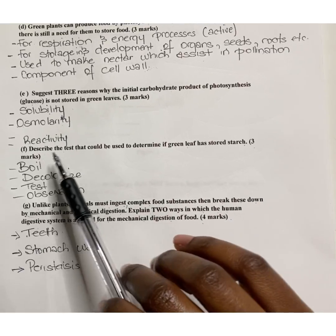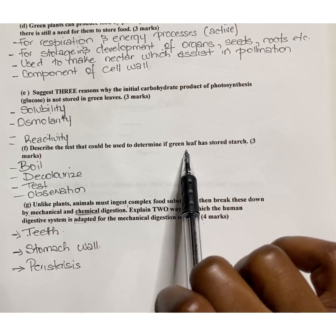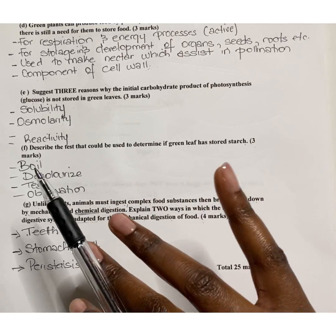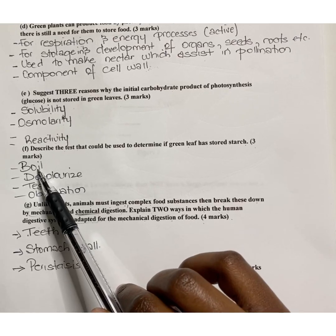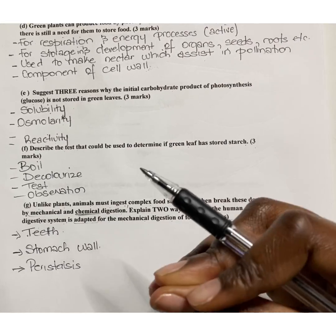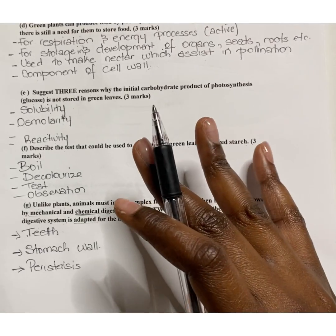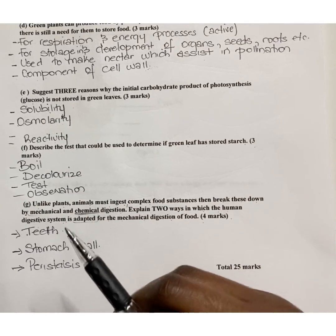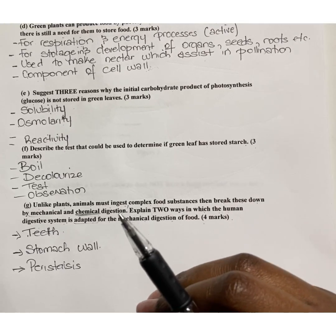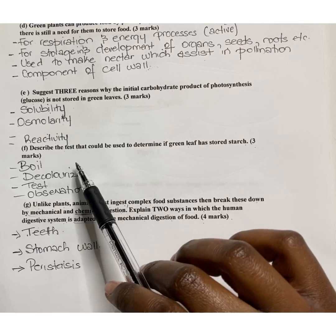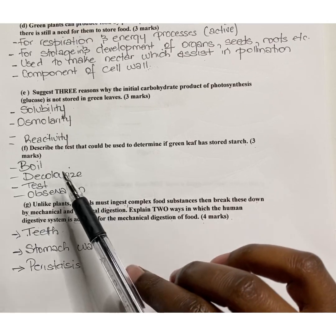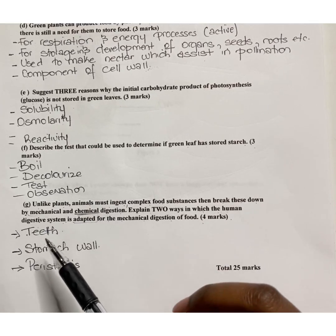Part f: Describe the test that could be used to determine if a green leaf has stored starch. To test if a green leaf has stored starch, one would first boil it in water. We boil it to kill the leaf, stopping all chemical reactions, and most importantly to break down the cell wall so that iodine can penetrate the starch molecules if present. Then add the leaf to a test tube containing ethanol in a water bath to decolorize it and remove the chlorophyll.